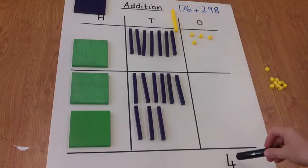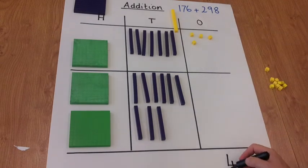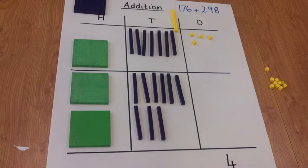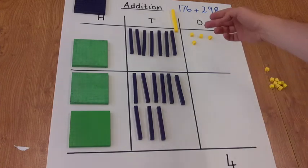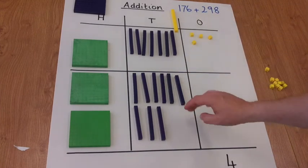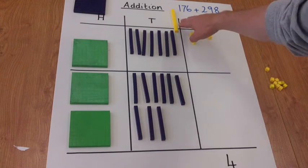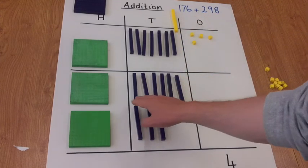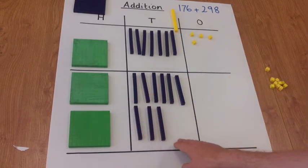So if we look at the ones column now, you'll see that there's 4 in the ones column. Now let's have a look at adding the tens column. If we count up how many we've got here, 8 plus 9 makes 17.